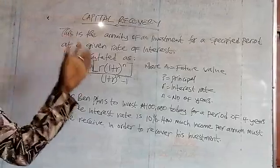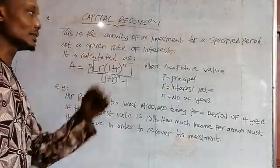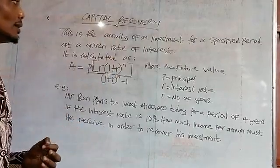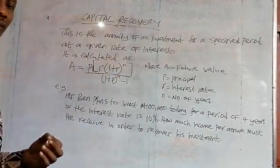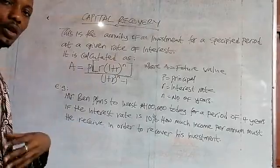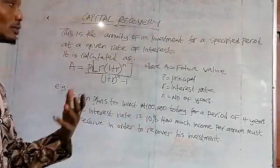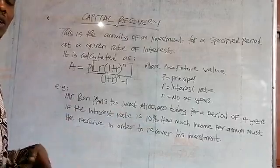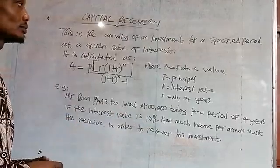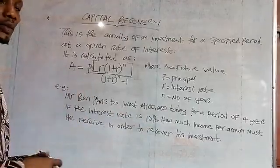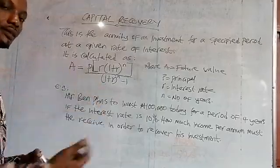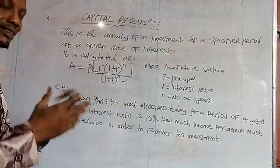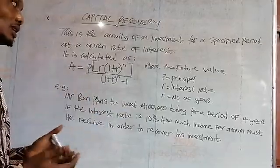We have learned about annuity, defined as a sum of money received or paid at a regular interval over a period of time. It is either a receipt or a payment that you make or receive at a regular interval over a period of time. That is annuity.